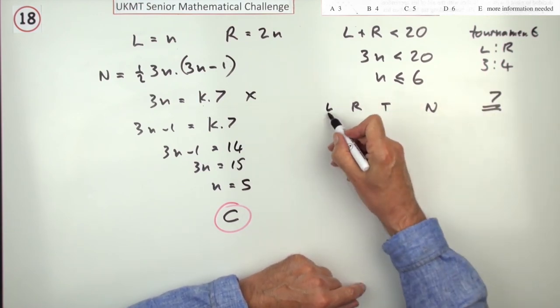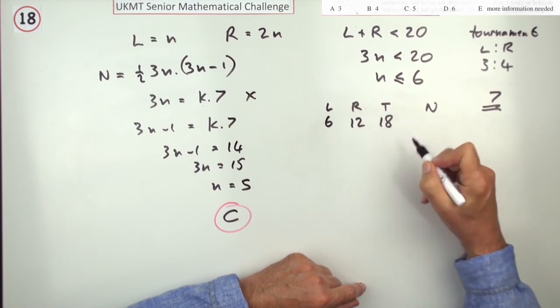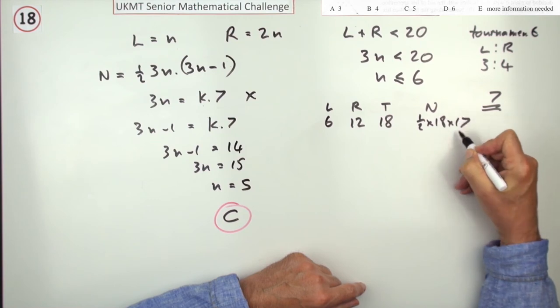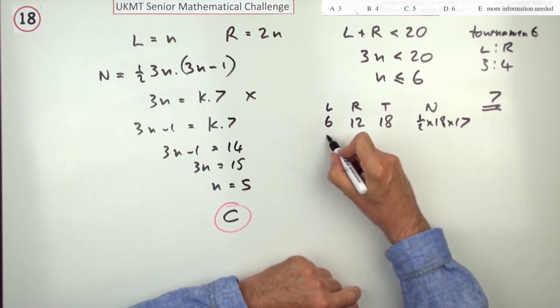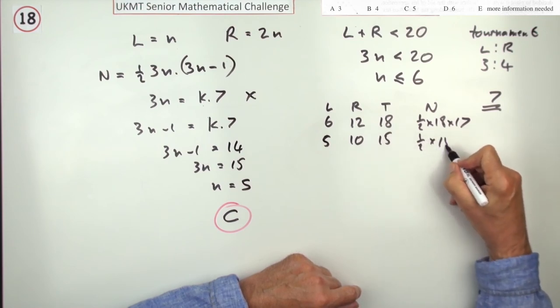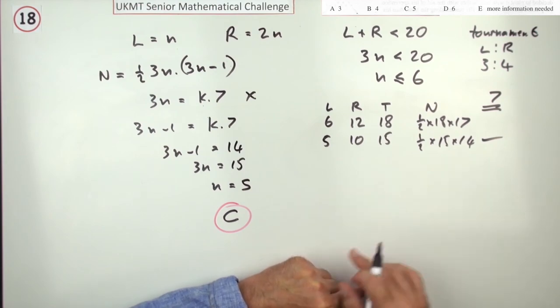Just to give you an example, if there's 6 left-handed, there'd be 12 of them making 18 altogether, so the number of matches would be a half of 18 times 17, since that's combinations within a group. If there was 5, there'd be 10, that would be 15, so it's a half of 15 times 14, and there you go, that divides by 7, and you could check the rest.